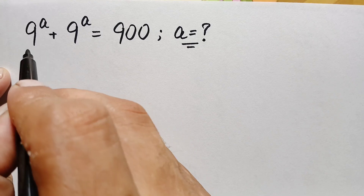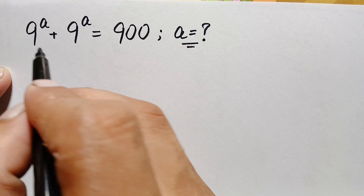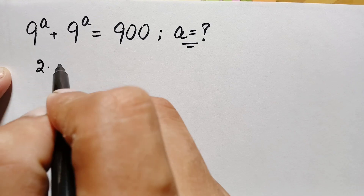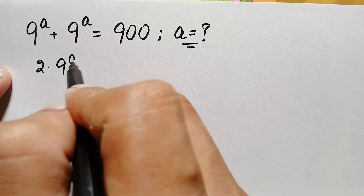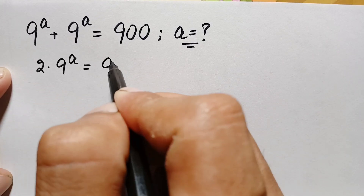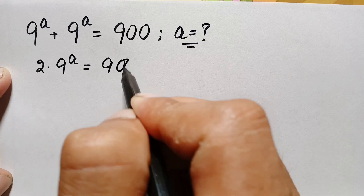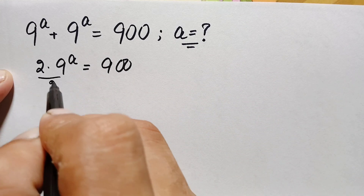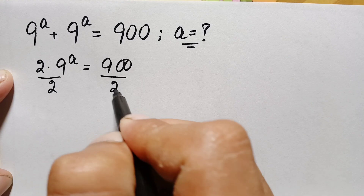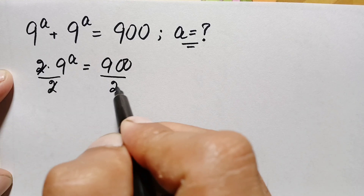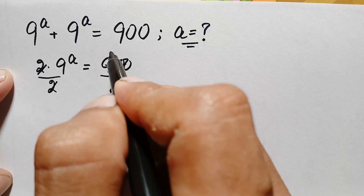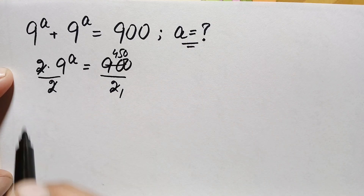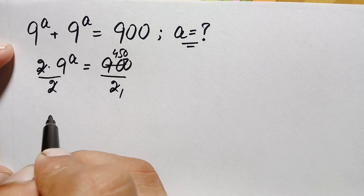On the left hand side, 9^a appears two times, so we can write it as 2 times 9^a is equal to 900. Now there is a 2 on the left hand side, so we divide both sides by 2. This 2 and this 2 will cancel, giving us 9^a is equal to 450.